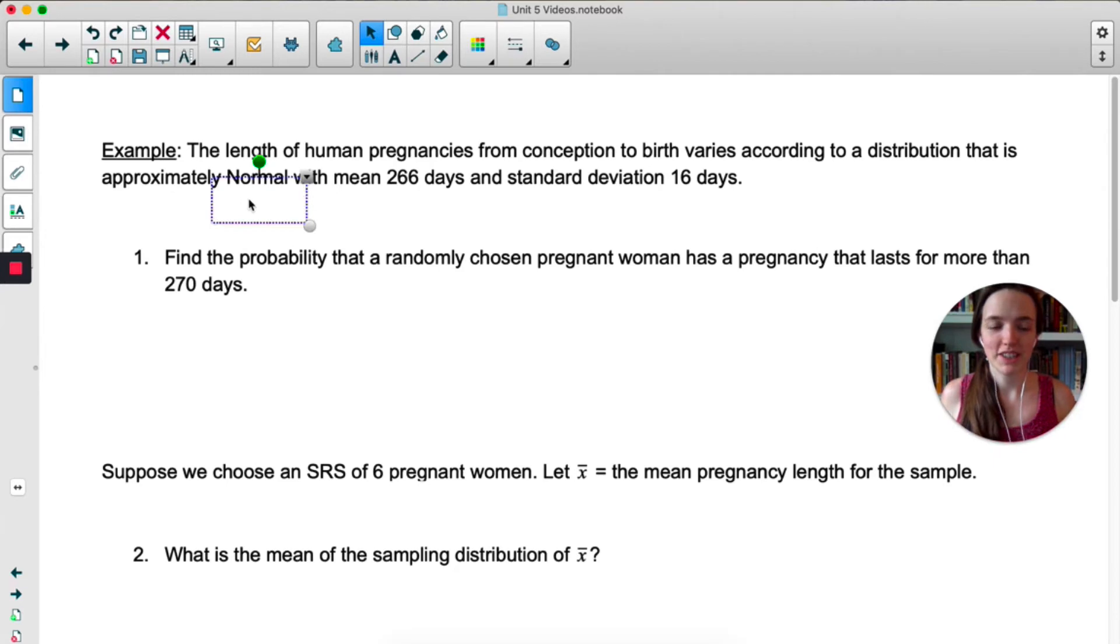Okay, so as we're reading this problem, let's note a couple things. It's a normal distribution. We're looking at the mean being 266 days, and this is all human pregnancies. So I'm calling it μ because it's the population. So it's the mean of the population of human pregnancies. Standard deviation of 16. So σ is 16. I just like to note things like that.